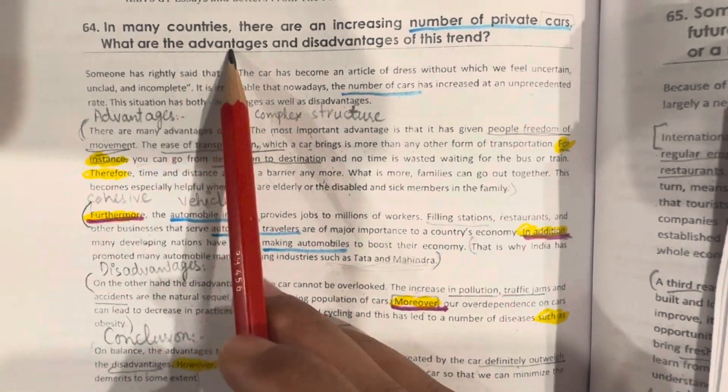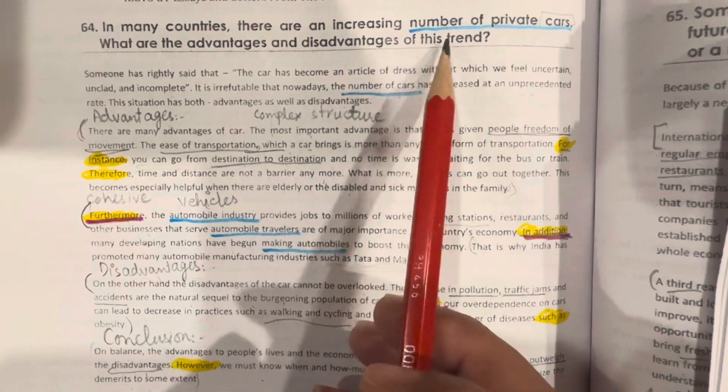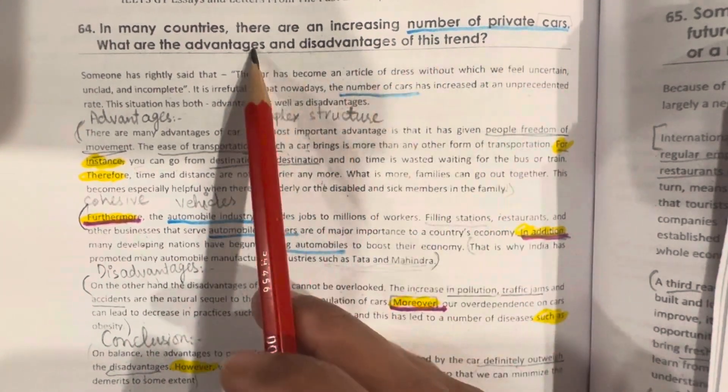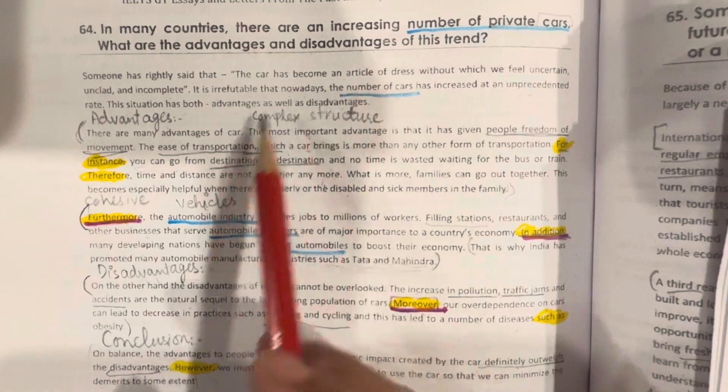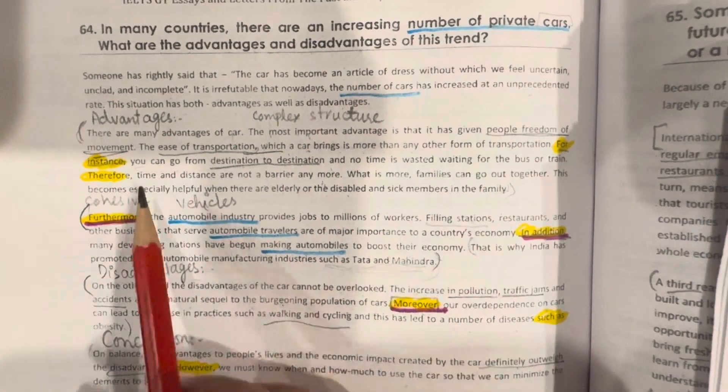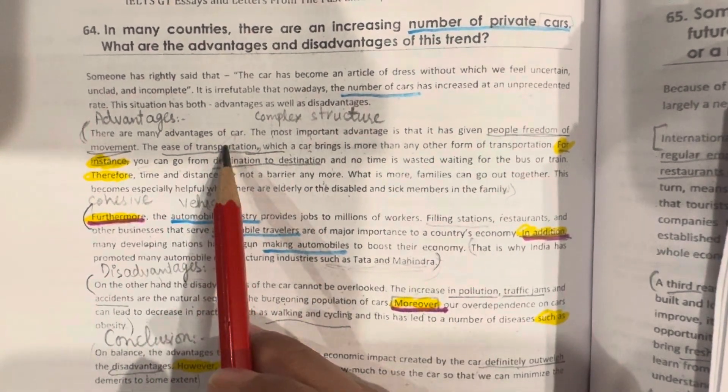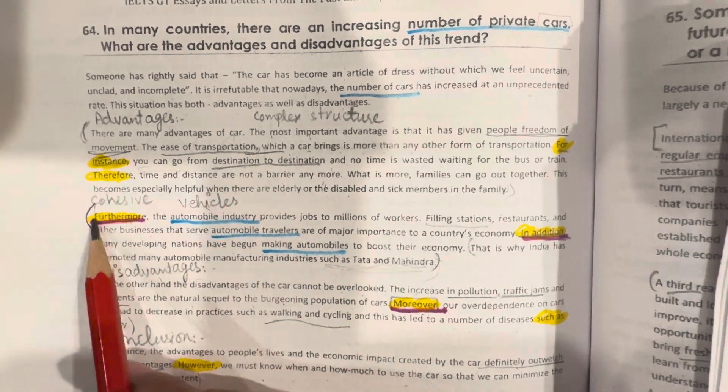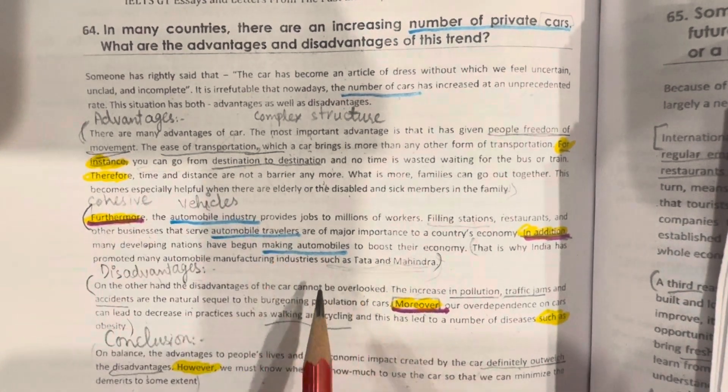Because this essay is about what are the advantages and disadvantages of this trend, private cars are the advantages or disadvantages. So, we are discussing more advantages. In the first body paragraph, we have discussed advantages. Then, we have used furthermore and moreover. In the second body paragraph, we have discussed advantages.